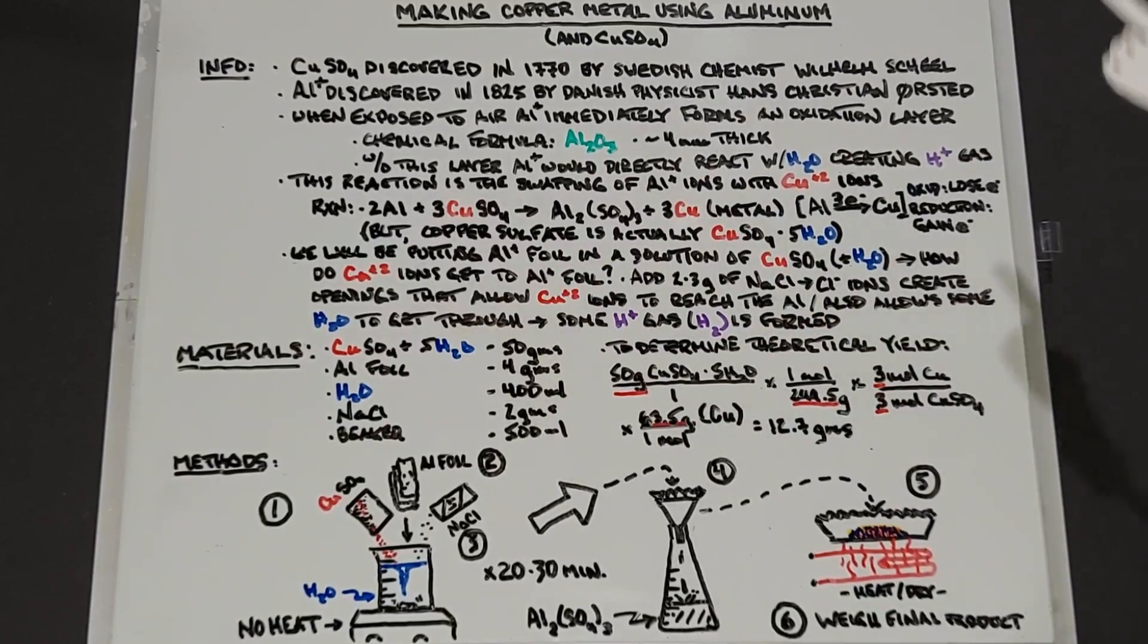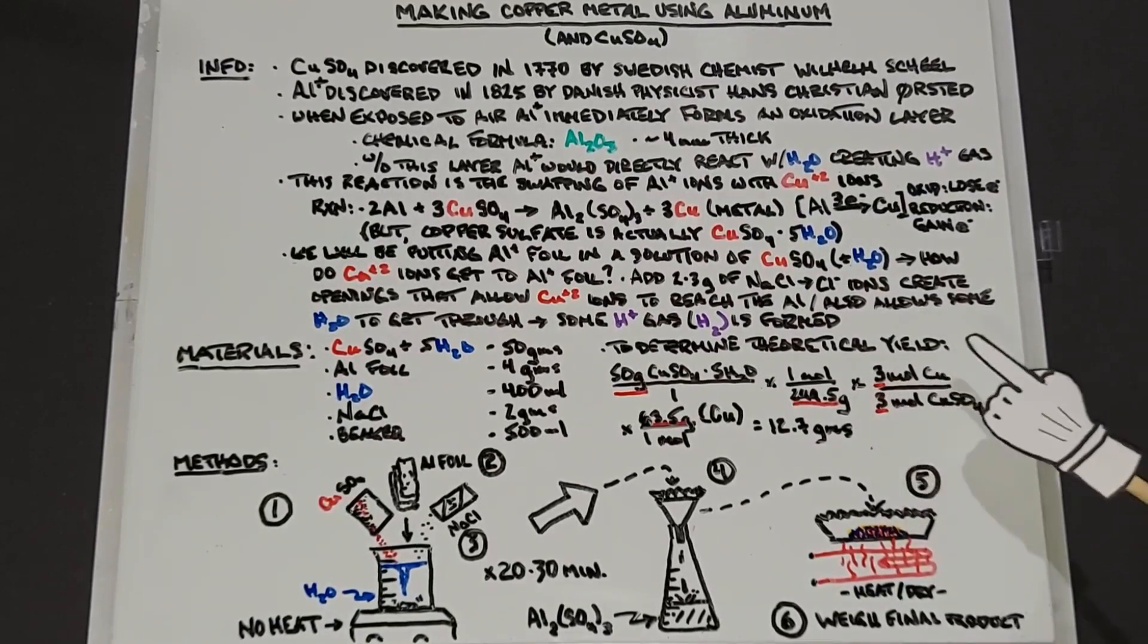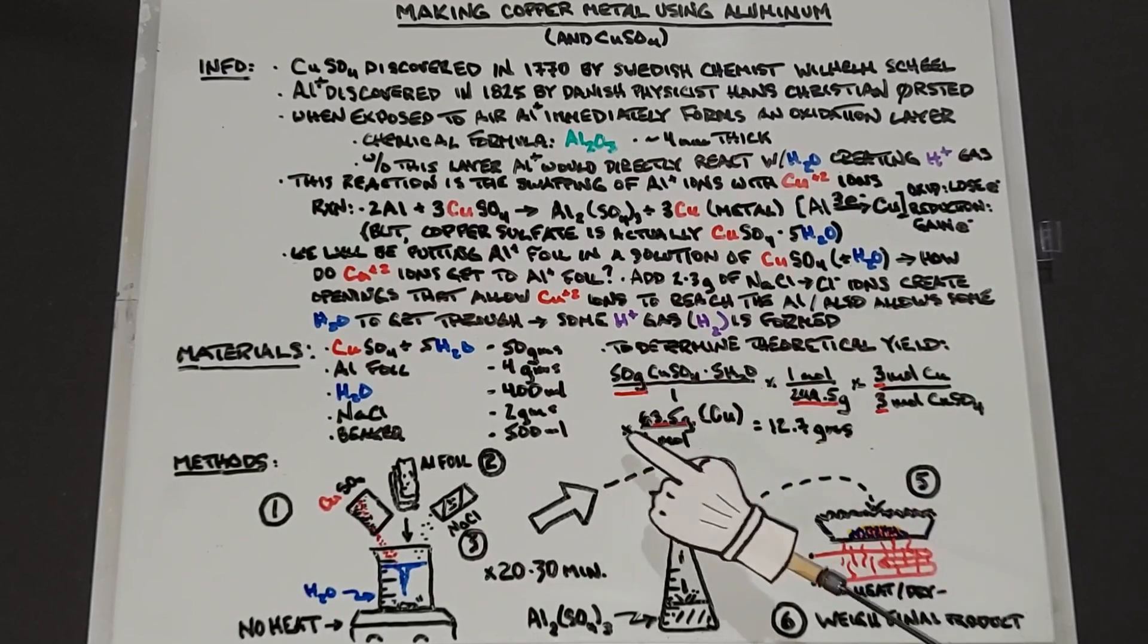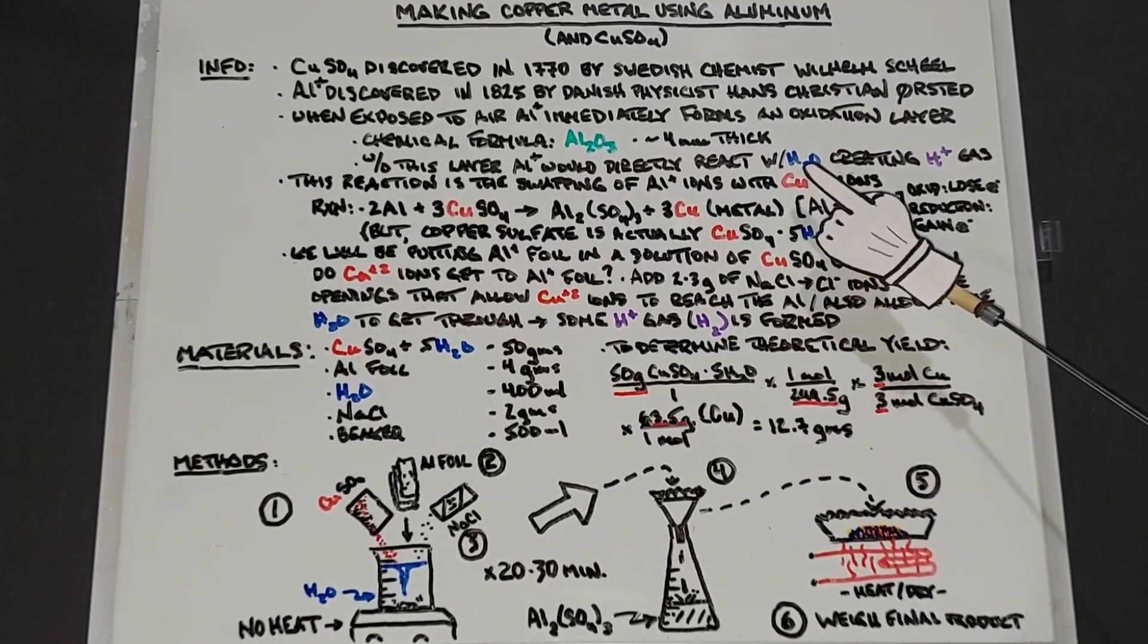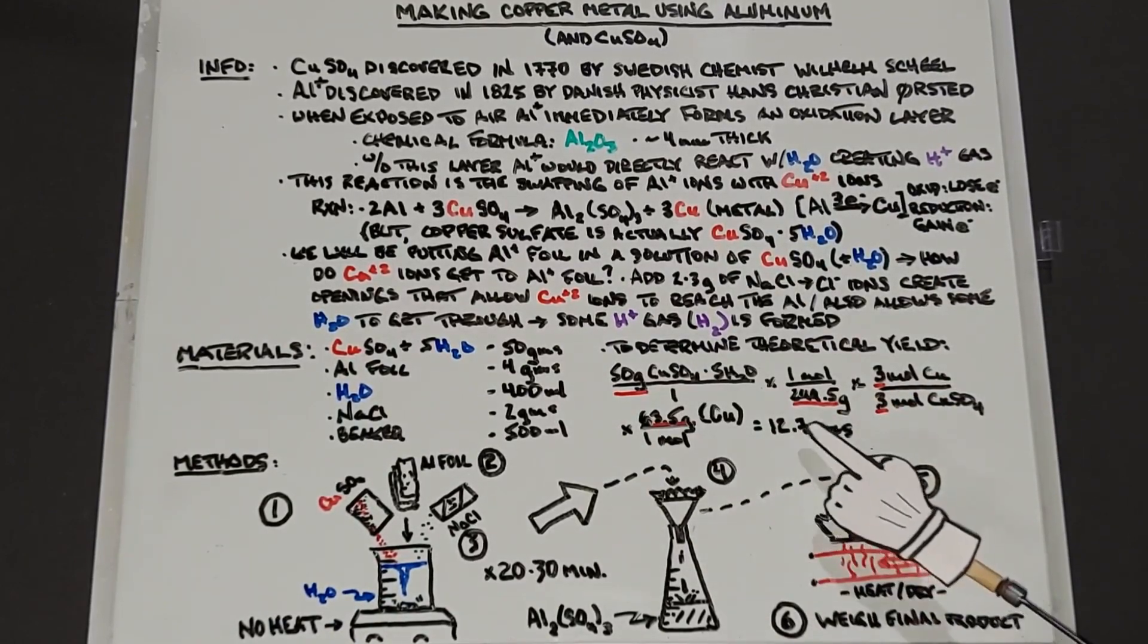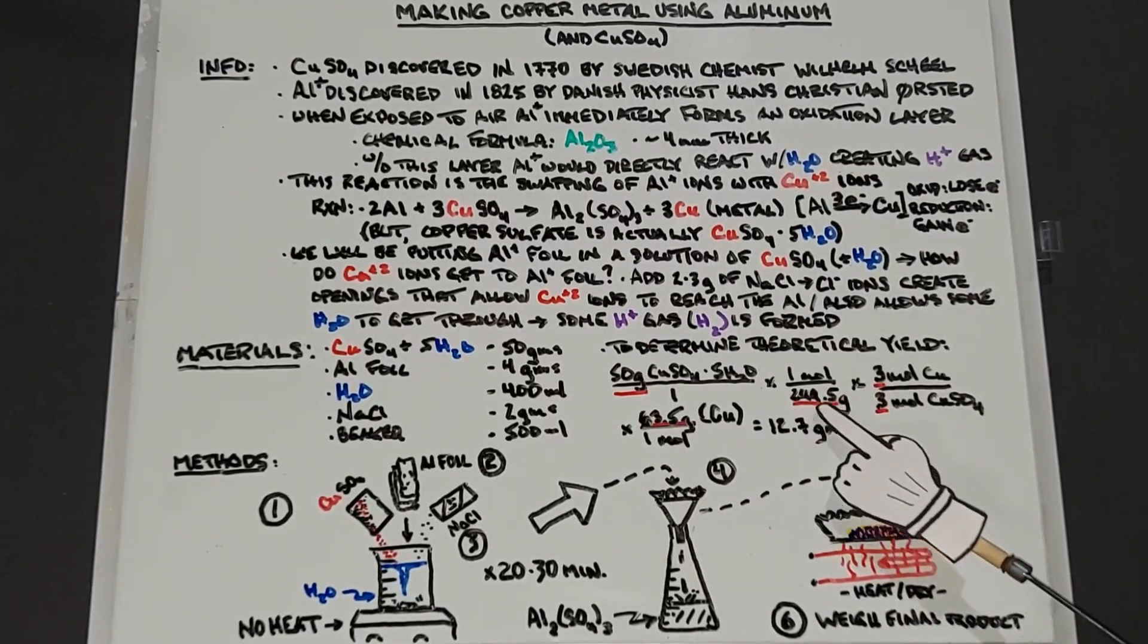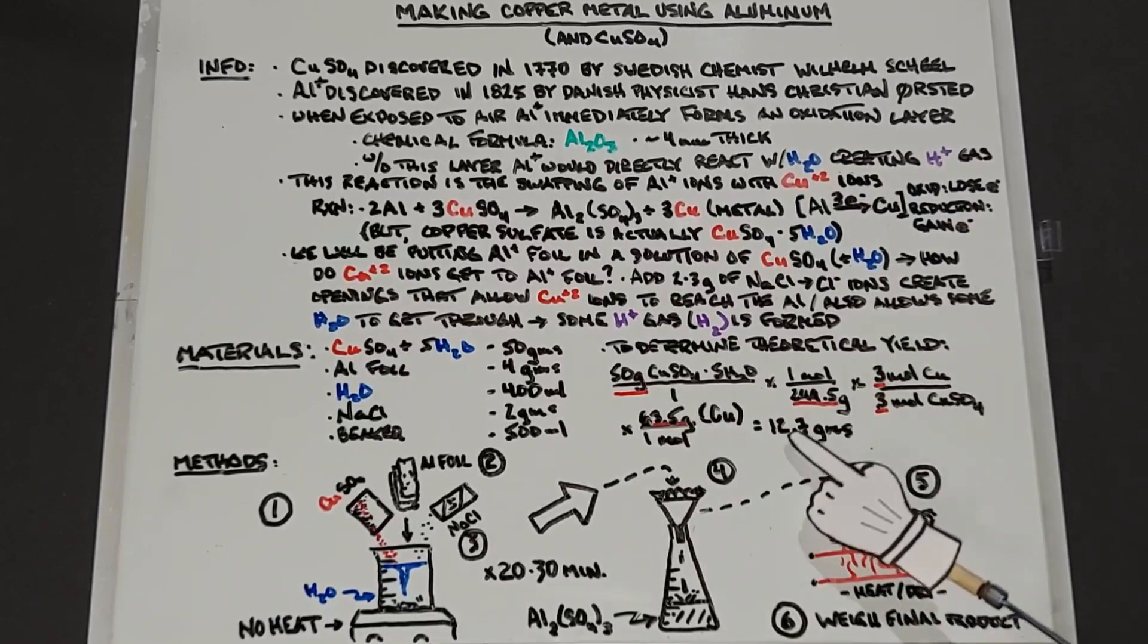These numbers happen to be three and three, so they cancel out. Then you multiply the weight of the copper all by itself, one mole of copper, that's the product that you end up with. When you do all of that, 50 divided by 249.5 times one times 63.5, that gives you 12.7 grams, which will be our theoretical yield.